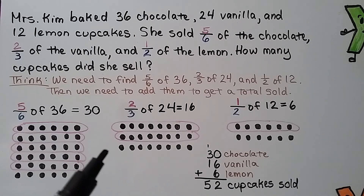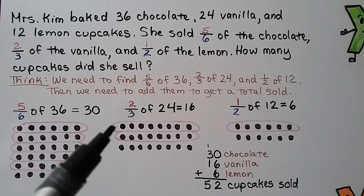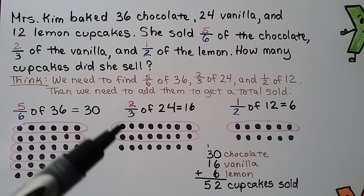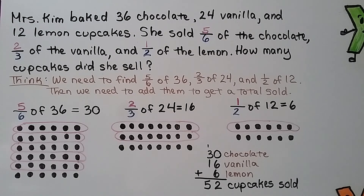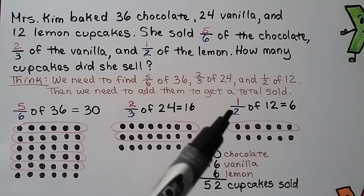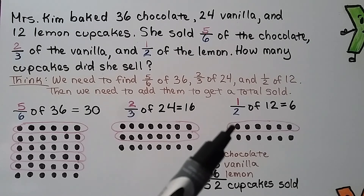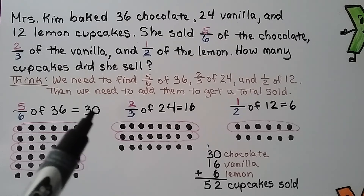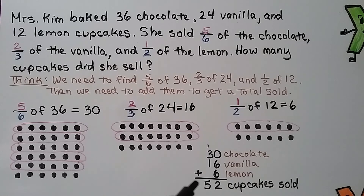For two-thirds of twenty-four, we make three rows and circle two of them. We have twenty-four in all. The counters in two of the rows are sixteen, so two-thirds of twenty-four is equal to sixteen. For one-half of twelve, we make two rows — the denominator is two — and circle one of them. There are six in that one row, so one-half of twelve is equal to six. We add thirty plus sixteen plus six and get fifty-two cupcakes sold.